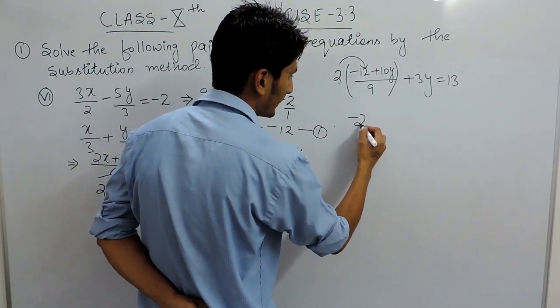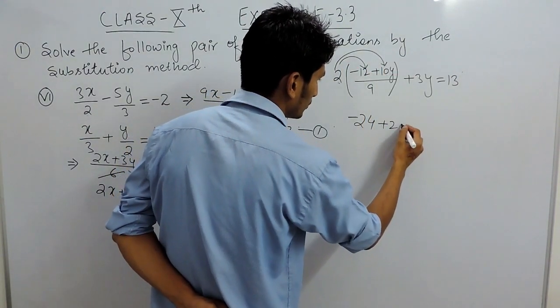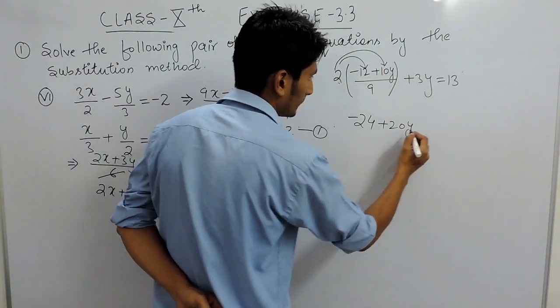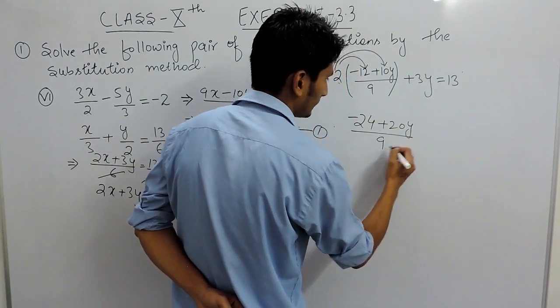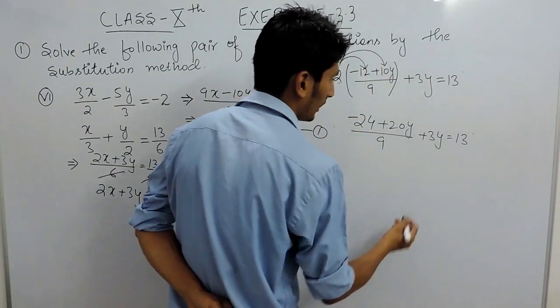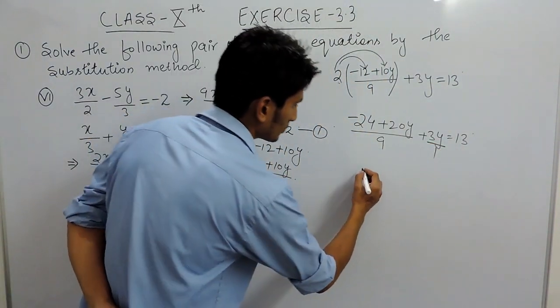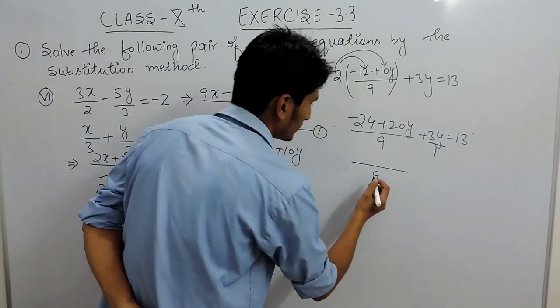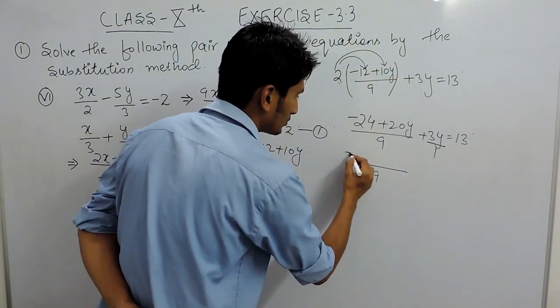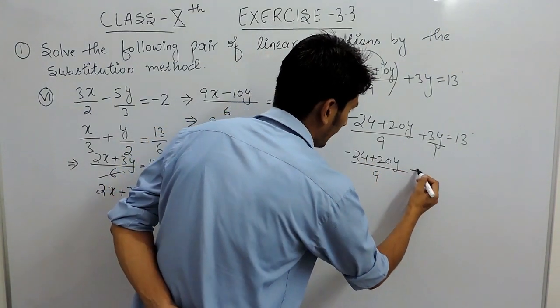whole upon 9 plus 3y equals to 30. Now because there is fraction you have to take LCM, so the LCM is 9 because 9 divided by 9 is 1, so this will remain as it is and this can be multiplied by 9 which is 27y equals to 30.